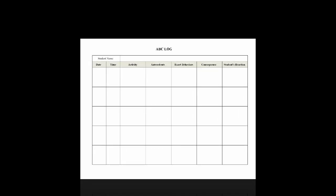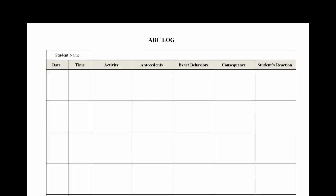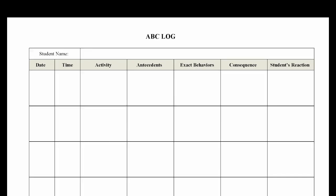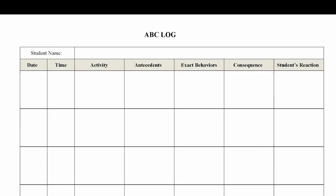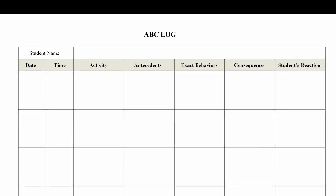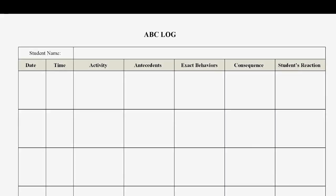The scatterplot is designed to show patterns of behavior over time. If behavior is found to occur during specific time blocks, the classes, activities, and conditions at those times should be examined using antecedent behavior consequence analysis, often called an ABC chart.